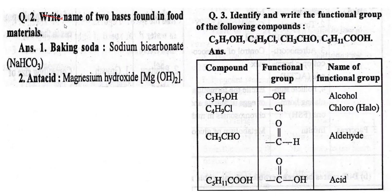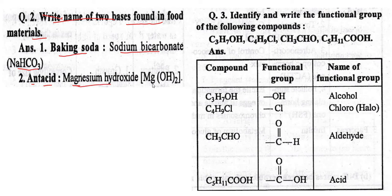Next question: Write the name of two bases found in daily-use materials. First one is baking soda — Sodium bicarbonate, formula NaHCO3. Second is antacid — Magnesium hydroxide, formula Mg(OH)2.